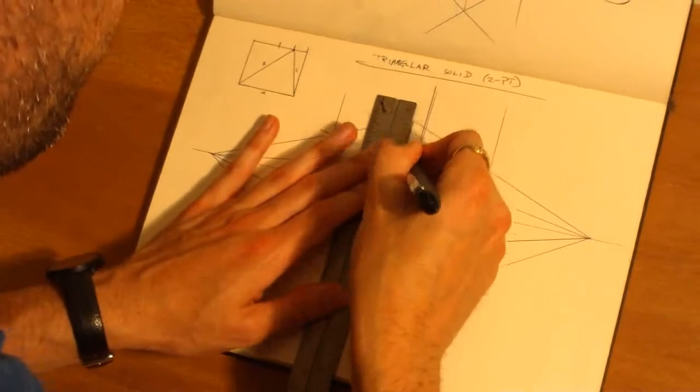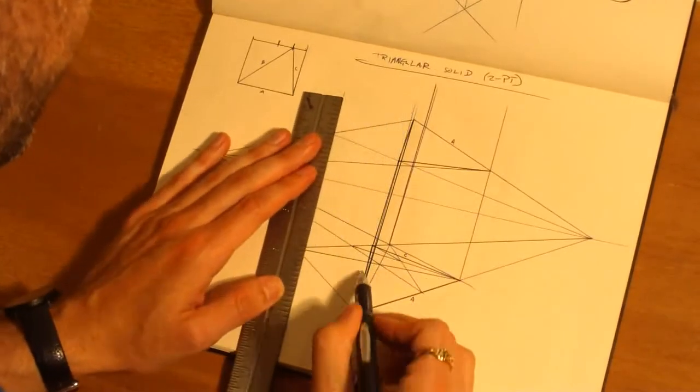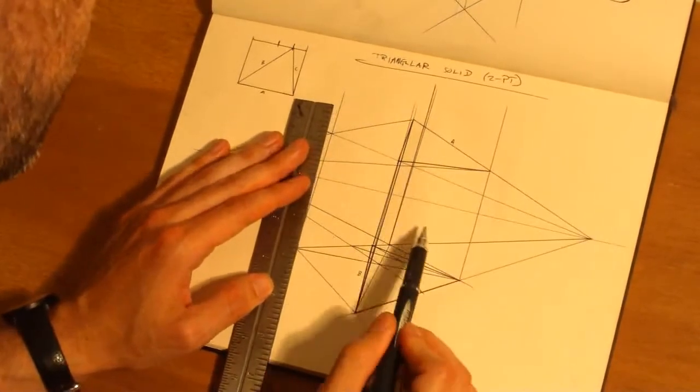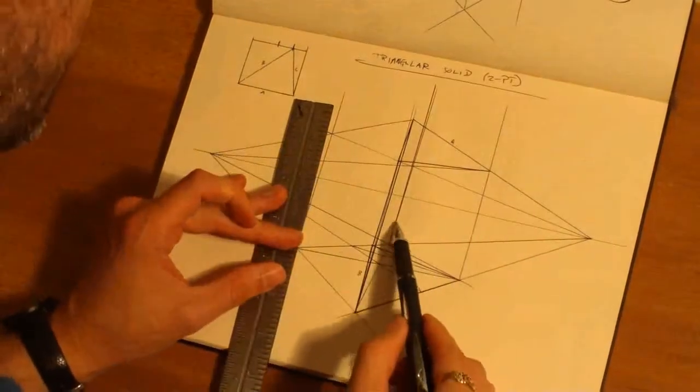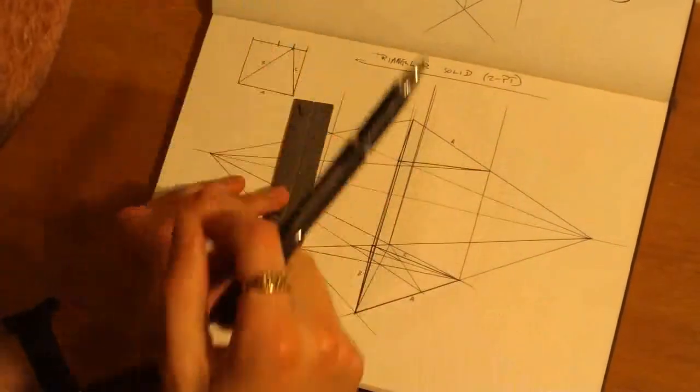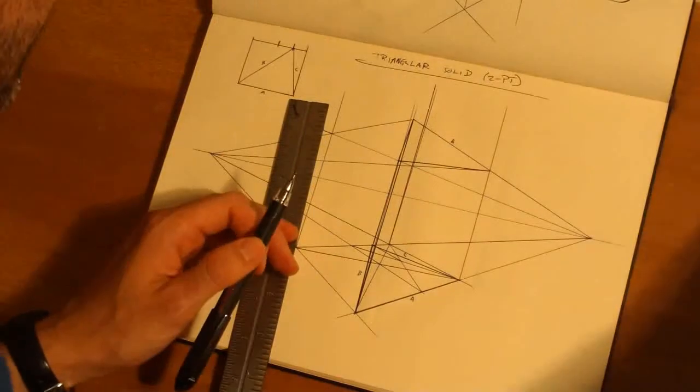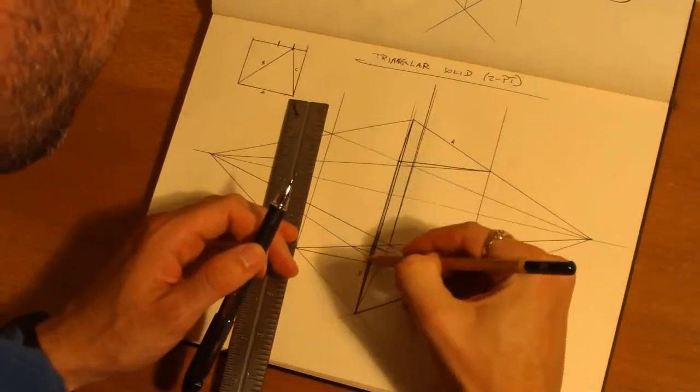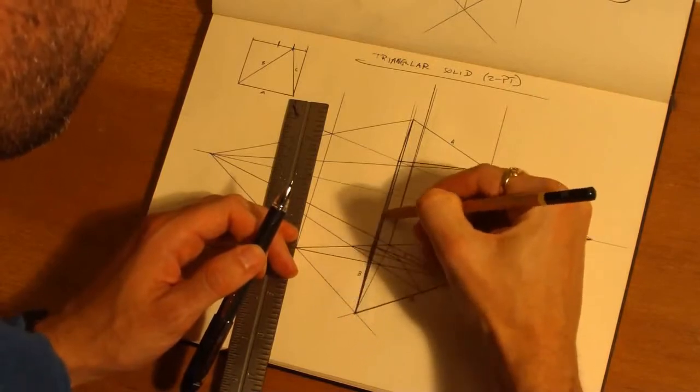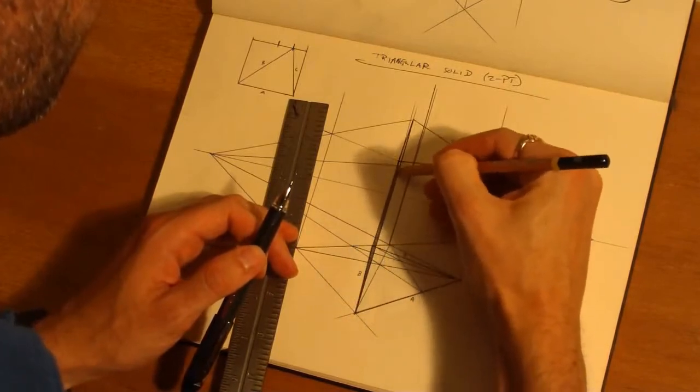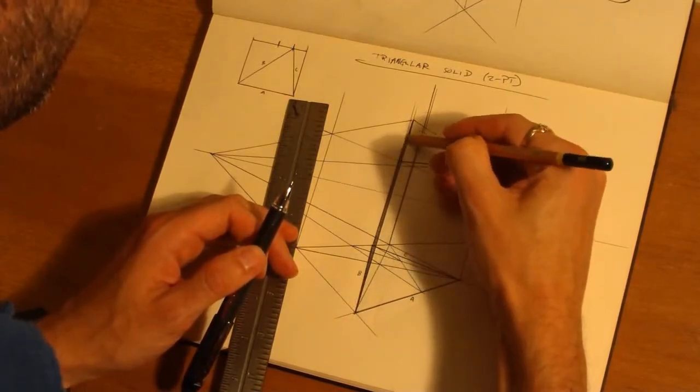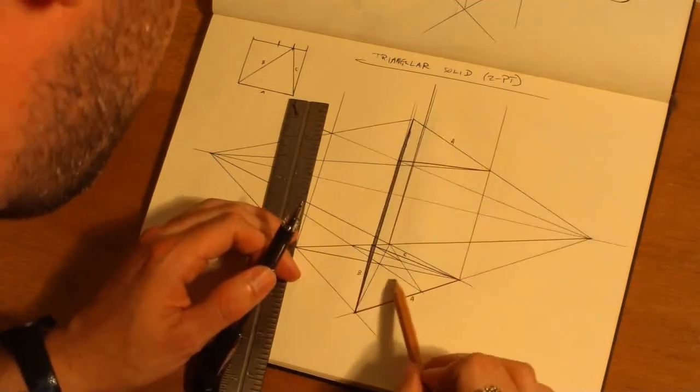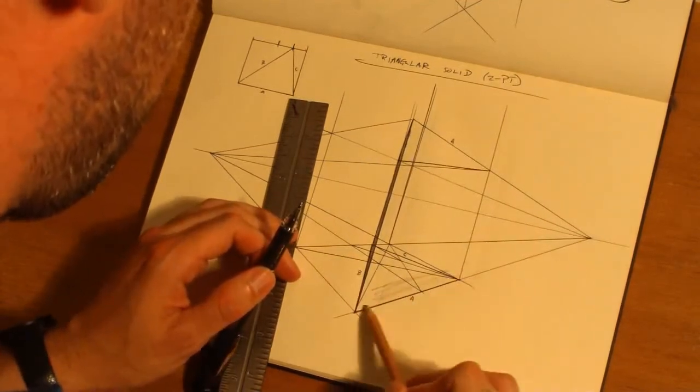But it's there, we can see it. We can see plane C as well. So just for the sake, I'm going to darken plane B, fill in that value.